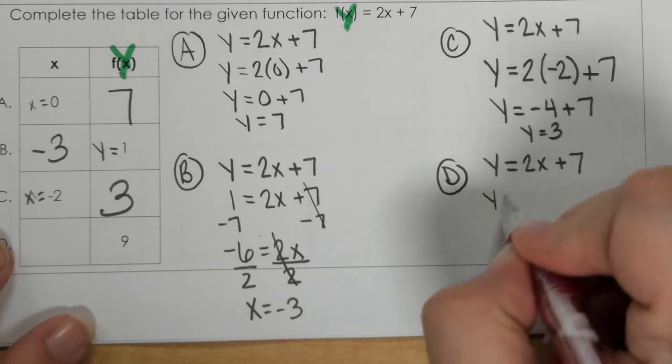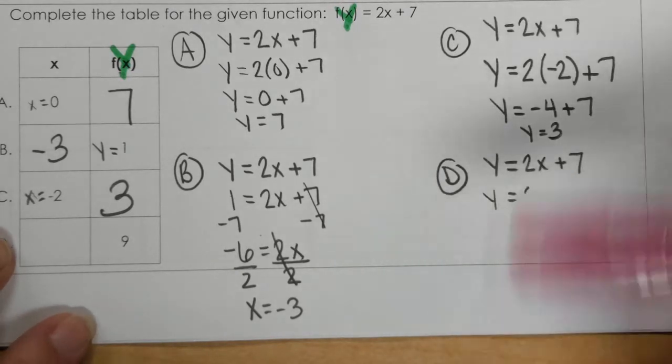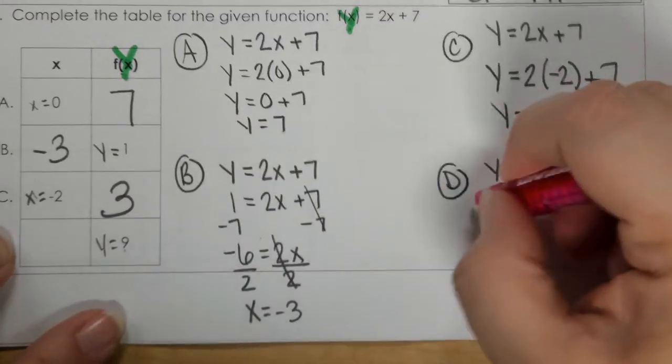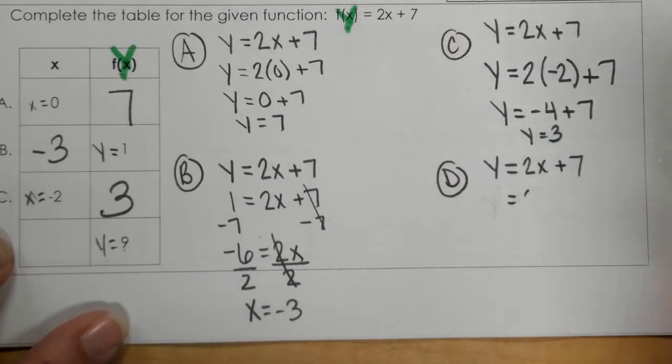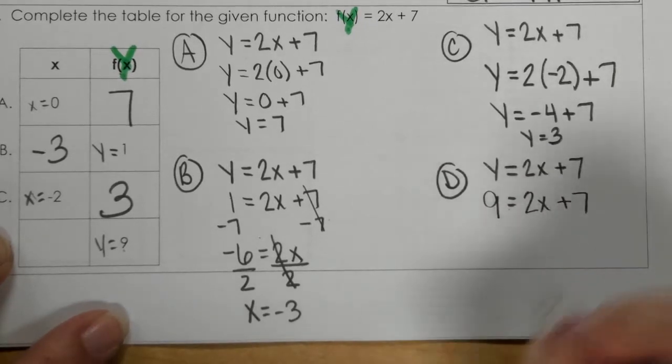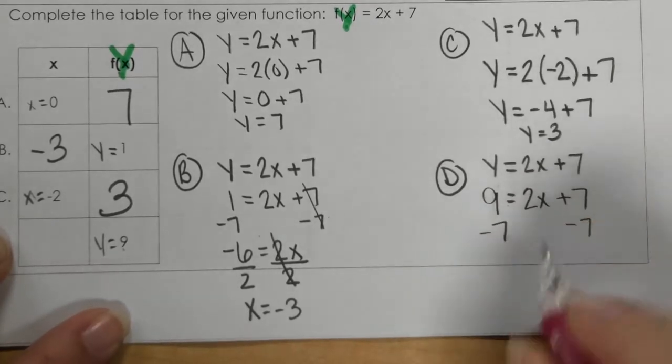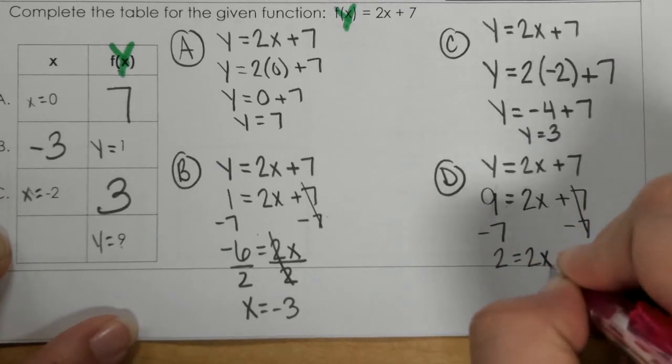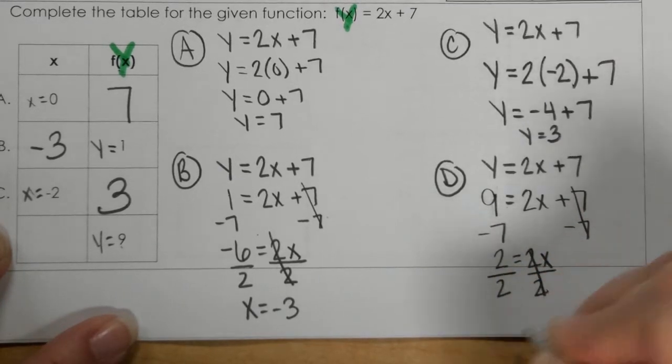For D, oops, 9 is y. So, I need to plug 9 in for the y. And then, 2x plus 7. I subtract 7. 9 minus 7 is 2. And then, I divide both sides by 2, and x is 1.